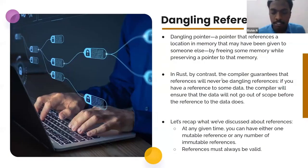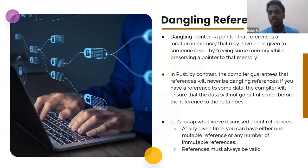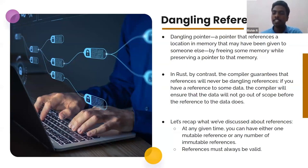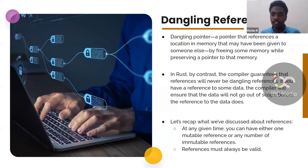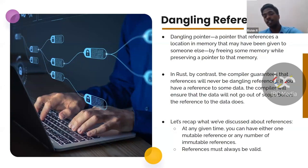What is a dangling pointer? This is an operating system concept. A dangling pointer is a pointer that references a location in memory that may have been given to someone else by freeing some memory while preserving a pointer to that memory. Basically, it is a pointer that used to point to real data, but now the data has been cleared and the pointer is pointing to nothing.